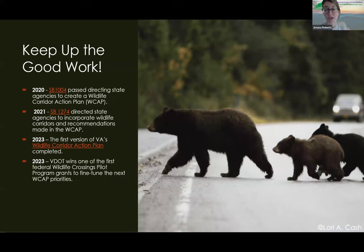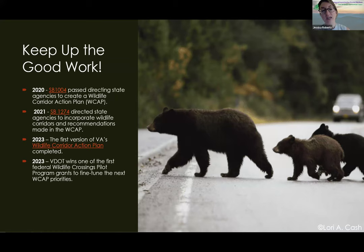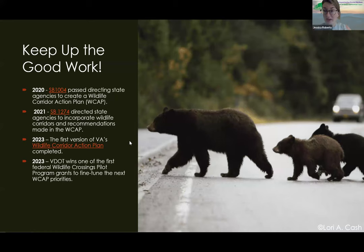The first version of the Wildlife Corridor Action Plan was published in May 2023 — really wonderful. We have the first iteration of how to deal with wildlife-vehicle conflict and enhance biodiversity in our state. And very recently, just about two months ago, the Virginia Department of Transportation won one of the very first federal grants from the Wildlife Crossing Pilot Program to advance more of the priorities of this action plan. So we're going to see that happening starting this year due to this federal funding.